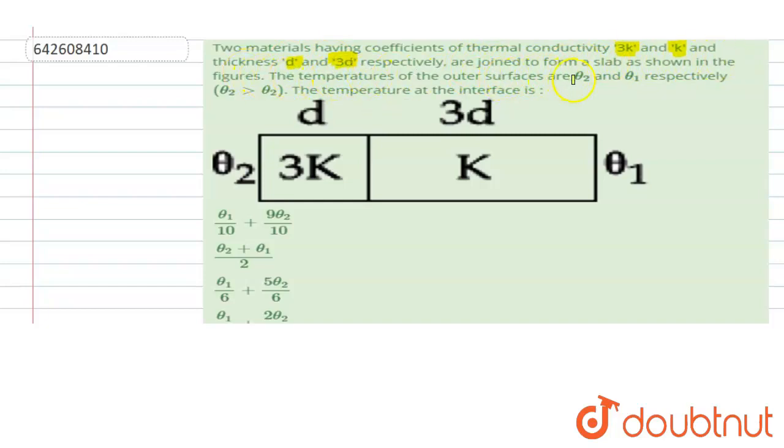The temperature of the outer surfaces are theta2 and theta1 respectively, where theta2 is greater than theta1. We have to find the temperature of the interface. Let's understand the situation.